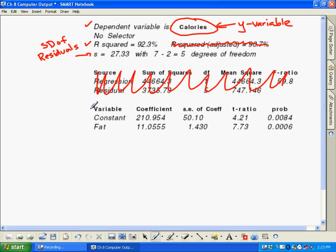And then down here you're going to see the word constant. Whatever the word is below it is what we would call the x variable. So the x variable in this case is fat, and the y variable is calories. Whatever is next to the x variable is our slope, and whatever is next to the word constant is the y-intercept.